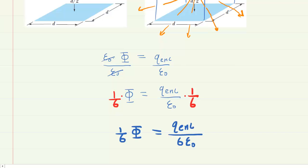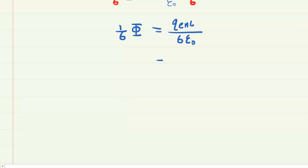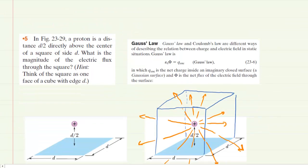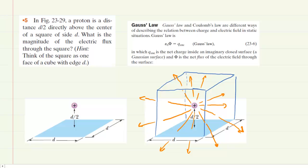This will give us the electric flux through one of the six faces of the cube. So now all we have to do is enter in the total amount of charge enclosed in our cubic Gaussian surface. And that was given in the question as the charge of a proton.